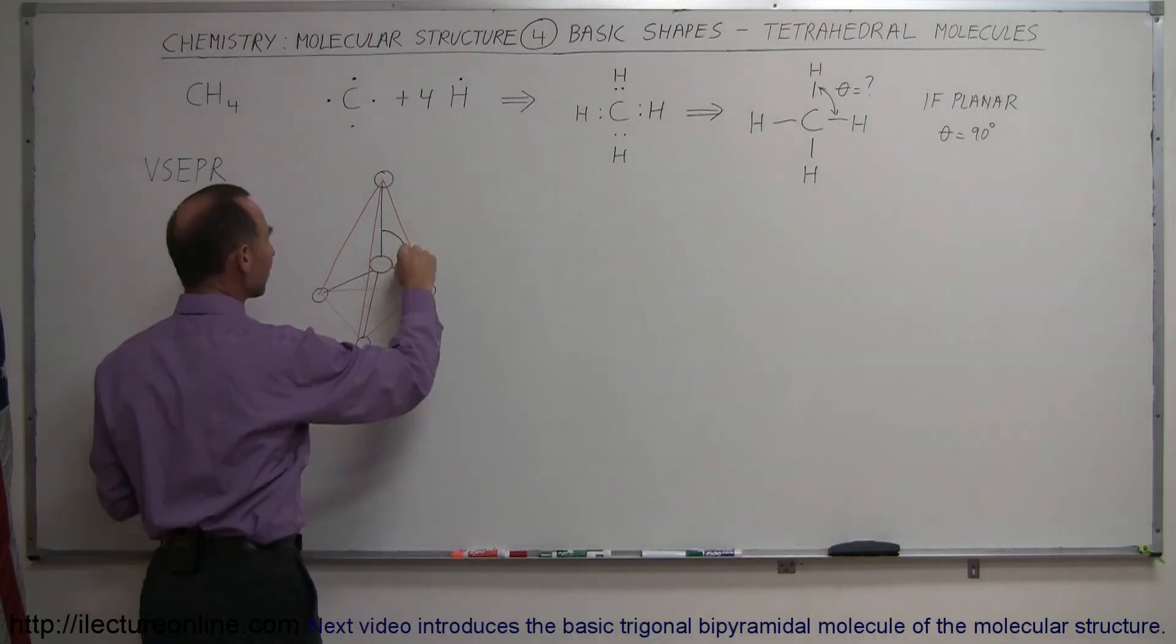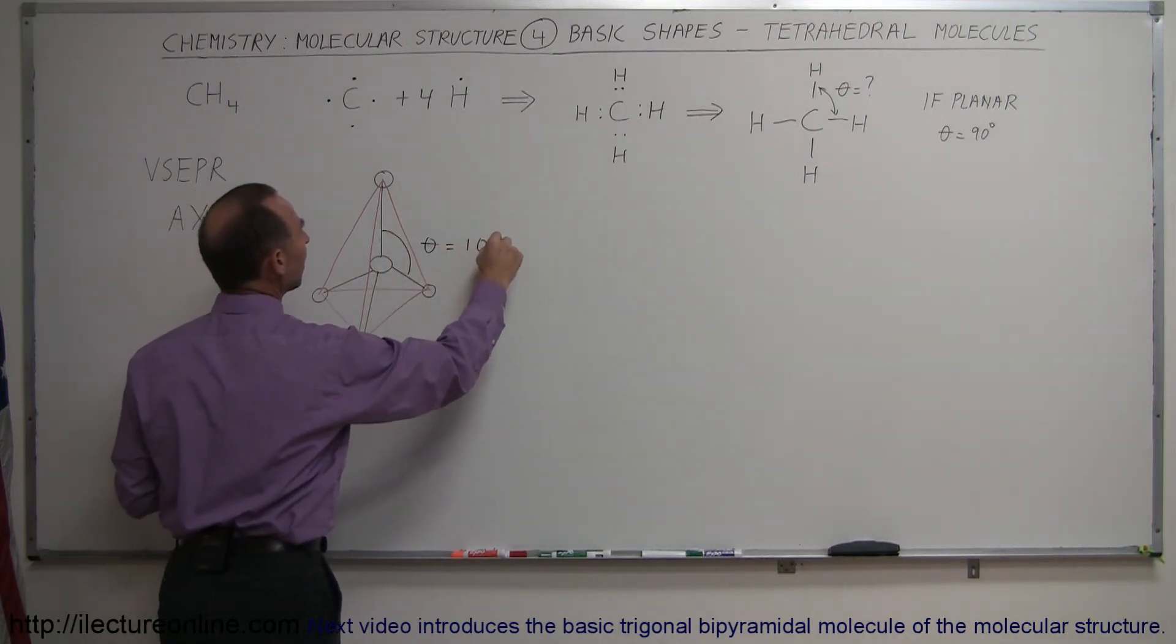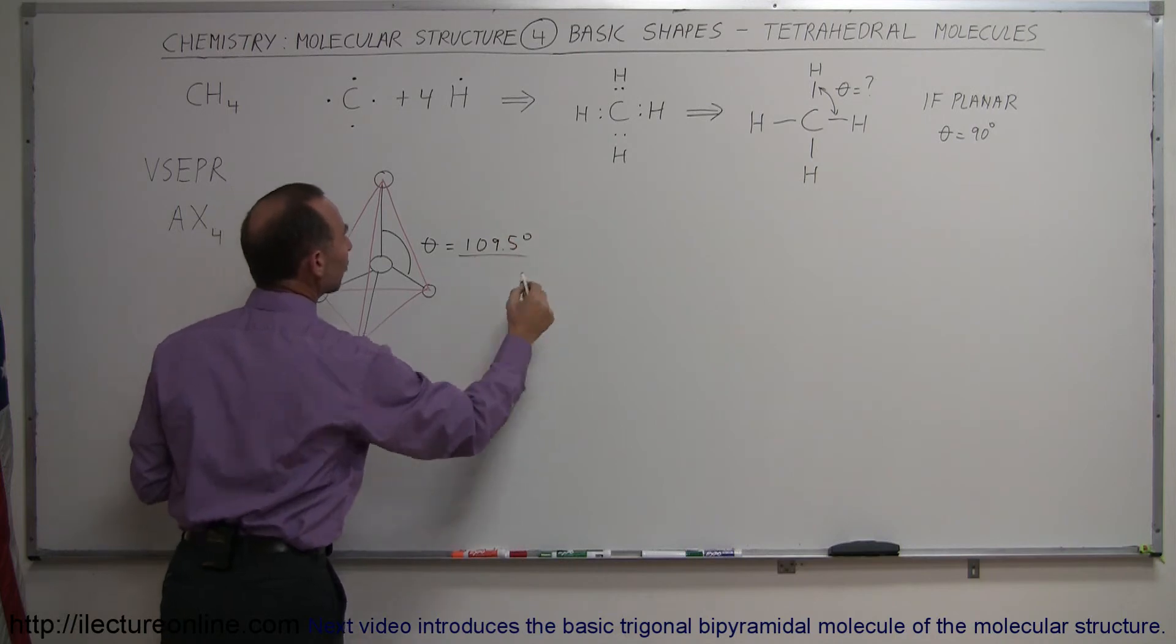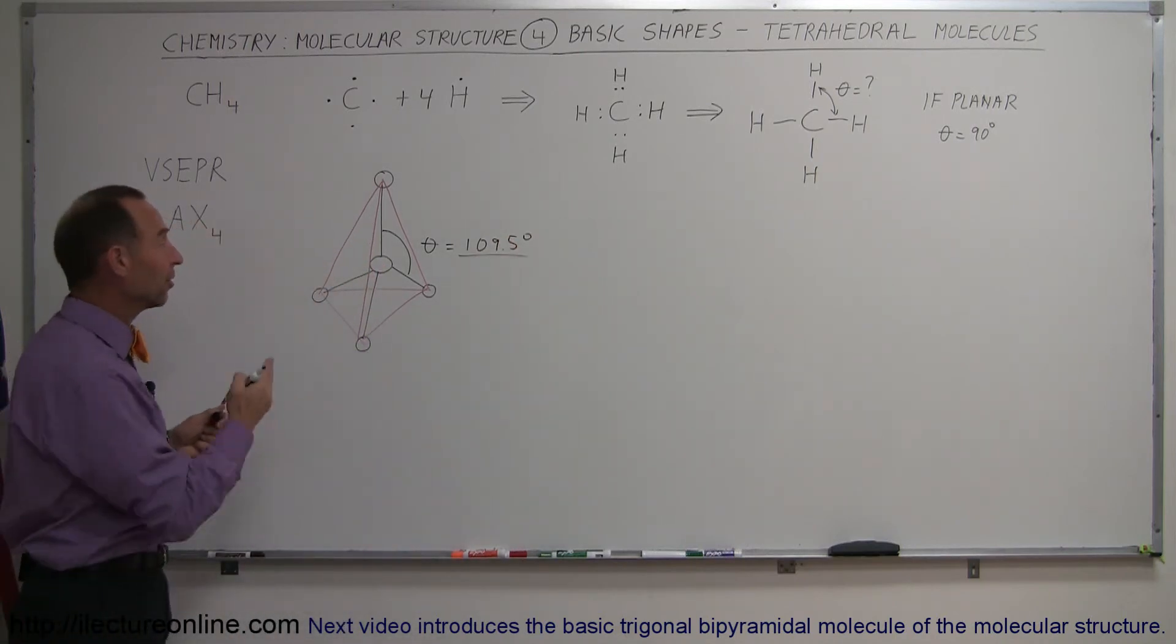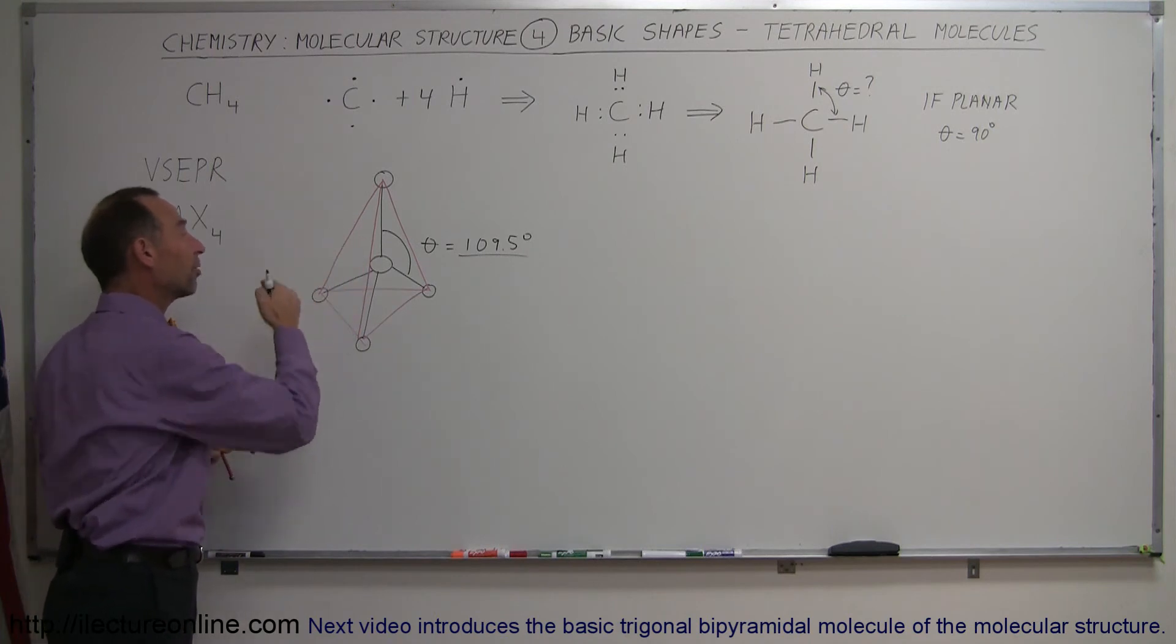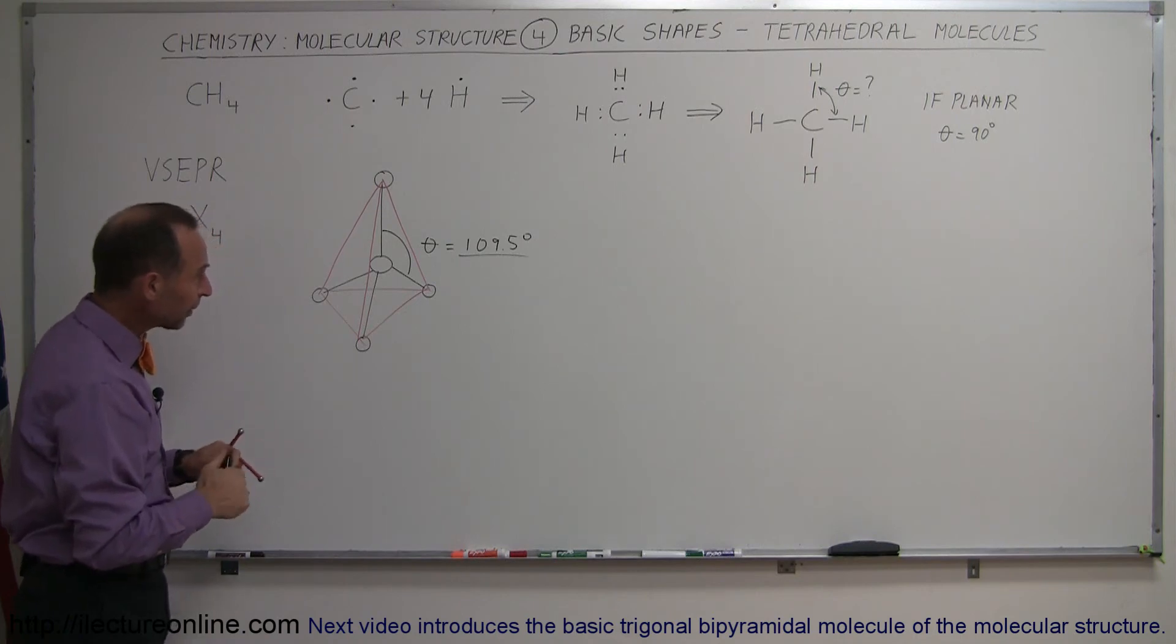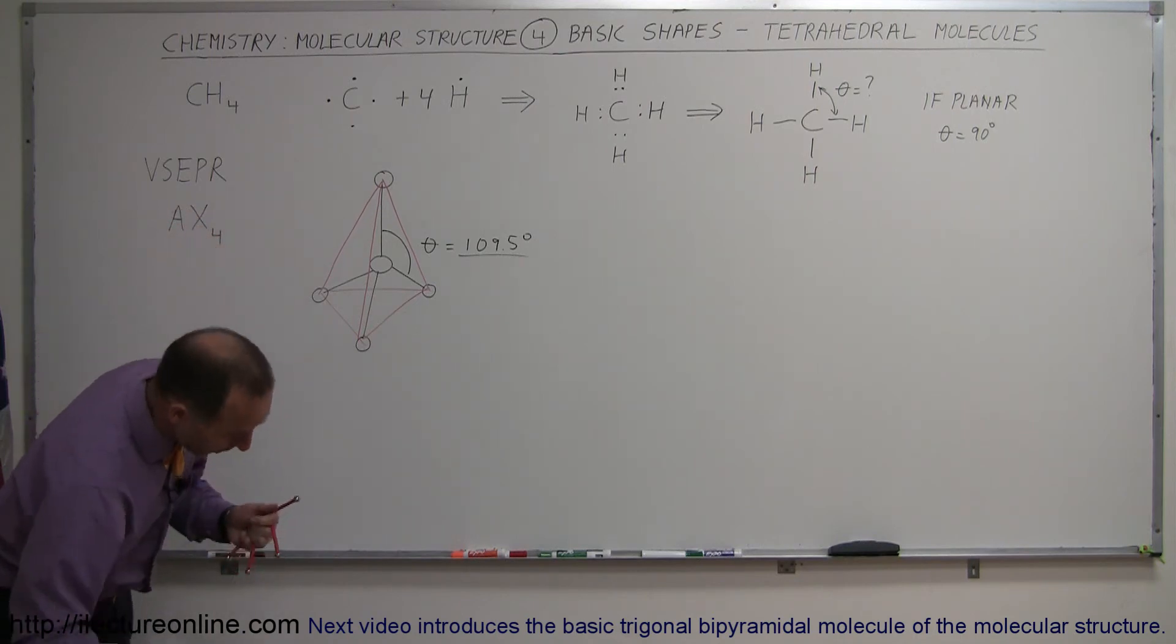The angle is 109.5 degrees, so theta in this case would be 109.5 degrees. Simply the force of repulsion forces it into that shape because in that shape, that is the largest possible angle you can have between the four sets of bonded electrons.